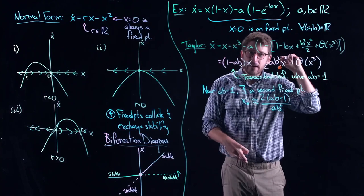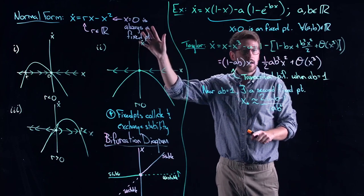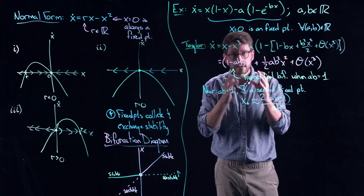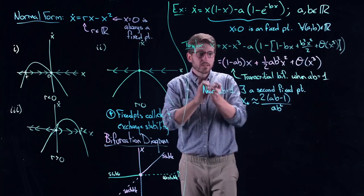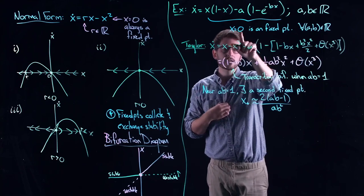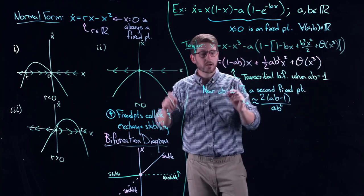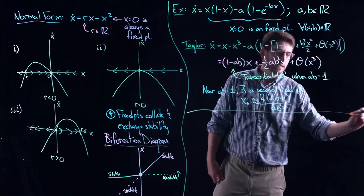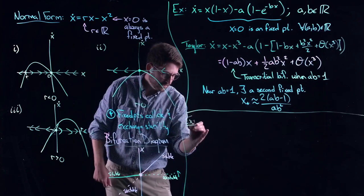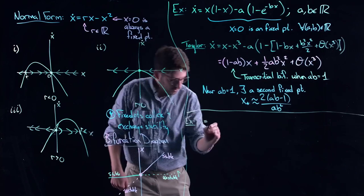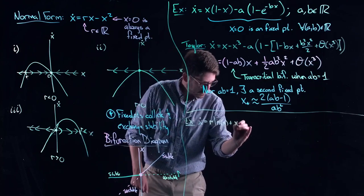Be careful: Taylor says you have to zoom way in. This is not telling us what happens for other parameter values or far away in space. Bifurcation is a local phenomenon. It just says that at ab = 1, near x = 0, you have a transcritical bifurcation — it doesn't say anything else about the system. Taylor is a zooming-in tool. Now let's look at another example: ẋ = r·ln(x) + x - 1.